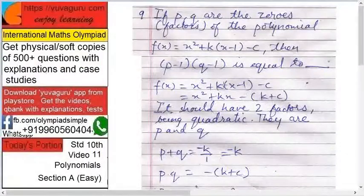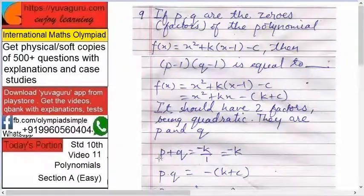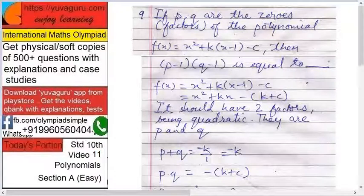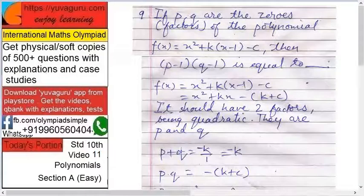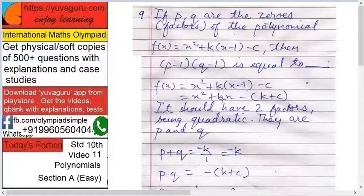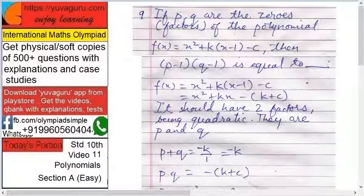So in our case, see this quadratic equation has two factors. Sum of the factors means what are the two factors? This is a quadratic so definitely two factors and they are given as p and q. Therefore sum of the factors p plus q equals to minus b upon a, minus k upon one.